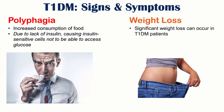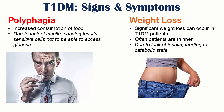Significant weight loss can also occur in type 1 diabetes. Type 1 diabetes patients tend to be thinner on average compared to type 2 patients, because lacking insulin means they are unable to synthesize fats properly. This is due to lack of insulin leading to a catabolic state — meaning things are being broken down rather than built up, as would be in an anabolic state.